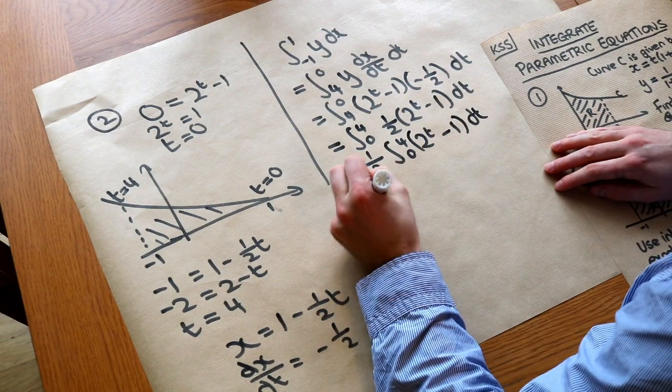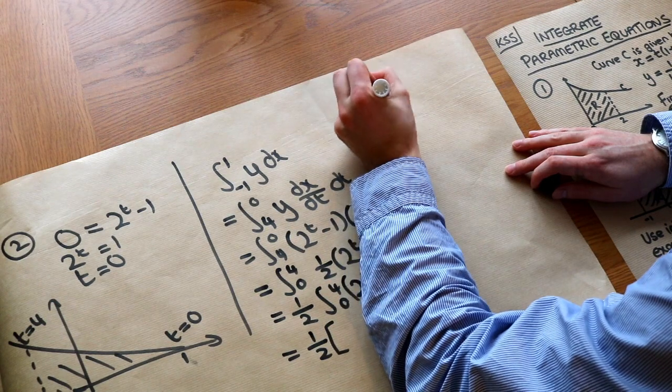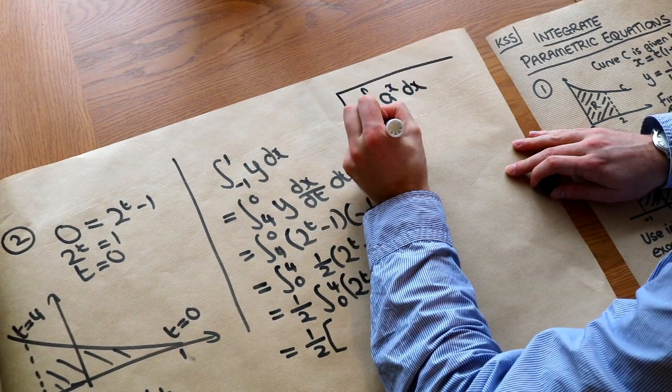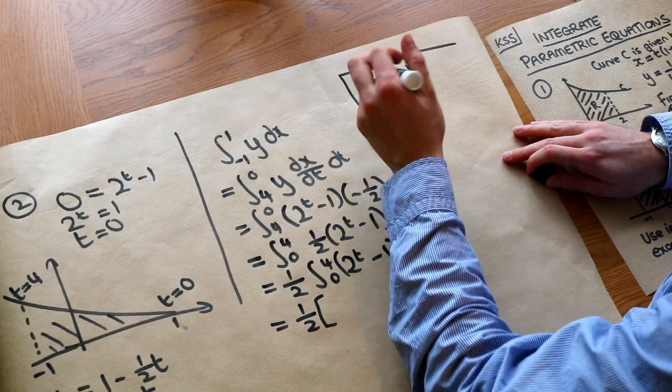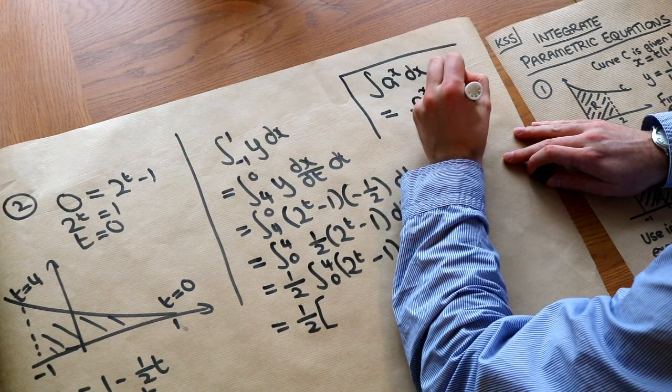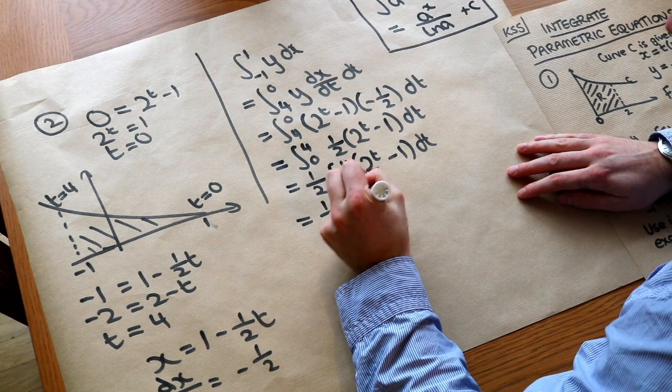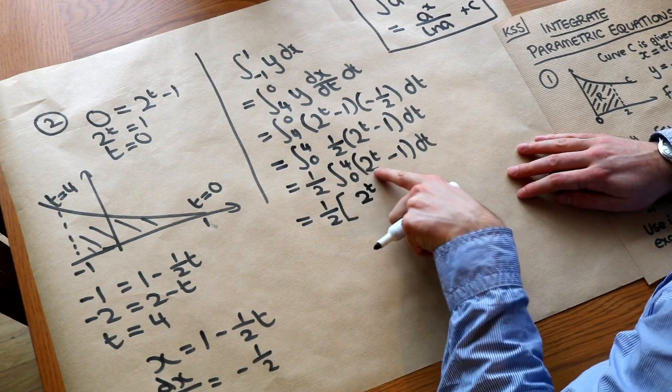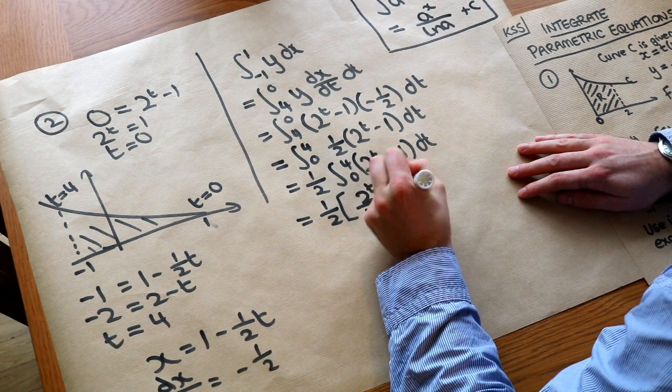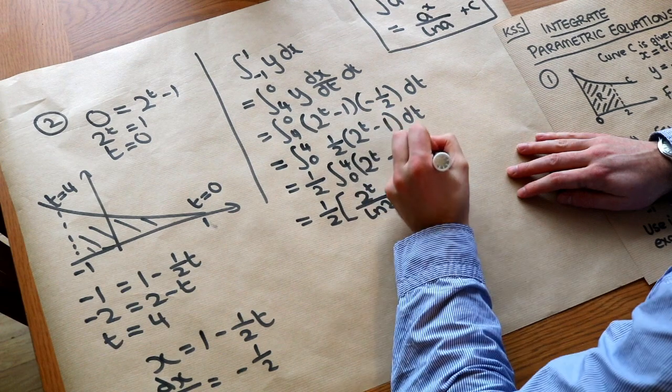So let's actually do this integration now. Now when you integrate any exponential function, so if I was to integrate a to the x with respect to x, do you remember that you divide by ln of the base? So I would get a to the x over ln of a. So we can use that result here. So that's going to become 2 to the T over ln of the base, so over ln of 2, and then the minus 1 integrates to minus T, because we're integrating with respect to T, and we've got these bounds of 4 and 0.